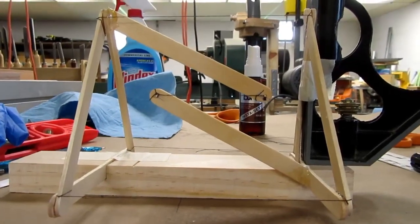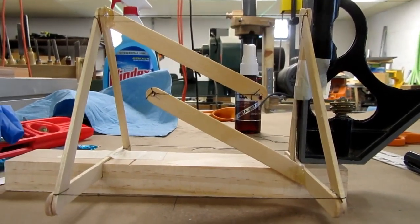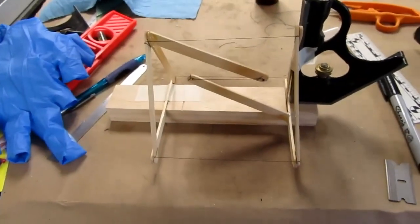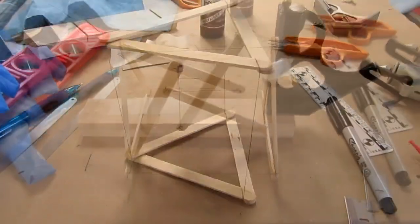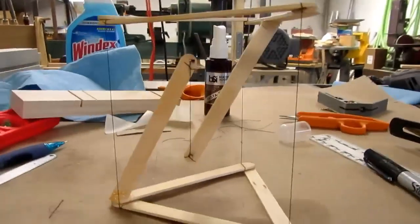Now if Buckminster Fuller is correct about this, and if I haven't screwed something fundamental up, this should have some structural stability once I take it out of the jigs. At that point, I'll pull it out.